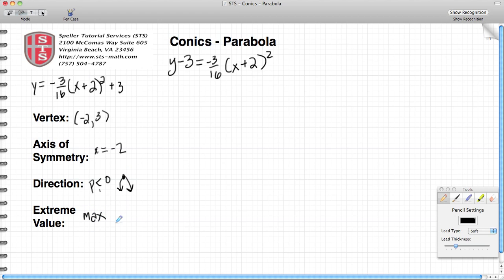Again, because it's pointing in a downward manner, that means we have a maximum value and that maximum value again is going to be shown as the y-coordinate of the vertex. So the max in this case would be where y is equal to 3.